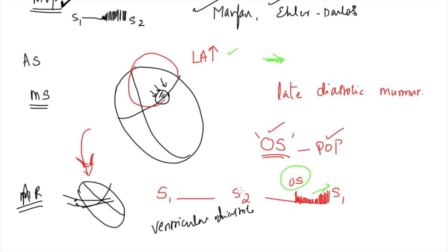In AR, immediately after systole there is a lot of blood in the aorta at high pressure. When diastole begins and the aortic valve opens abnormally, the initial gush of backflow is very rapid because of that high post-systolic aortic pressure. Therefore the murmur intensity is highest at the beginning of diastole, giving a decrescendo pattern.